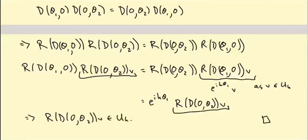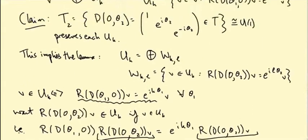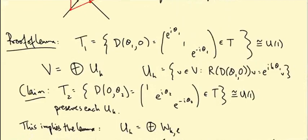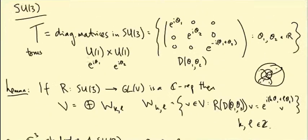That proves the claim. This argument doesn't really use the fact that this is a two-dimensional torus — it works for any abelian group, any U1×U1×U1. So this works much more generally than for SU3. In general, if our torus is U1×U1×...×U1, the weight space decomposition is indexed by one integer for every factor of U1. For SU4, you get U1×U1×U1, so weight diagrams are three-dimensional polyhedra; for SU5, four-dimensional polyhedra, and so on.